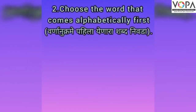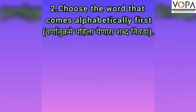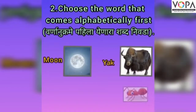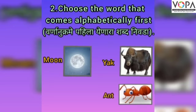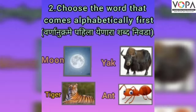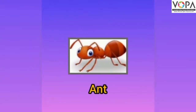The next question is: choose the word that comes alphabetically first. The options are moon, yak, ant, and tiger. The correct answer is ant — we start with A and T.